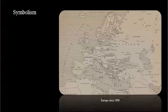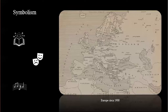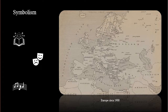Symbolism in art developed in the last two decades of the 19th century and occurred in all forms of art, including literature, theater, and music. It developed earlier in literature, but in the visual arts, symbolism was most prominent in the later part of the century and was active preeminently in Scandinavia, Belgium, the Netherlands, and the German-speaking regions.